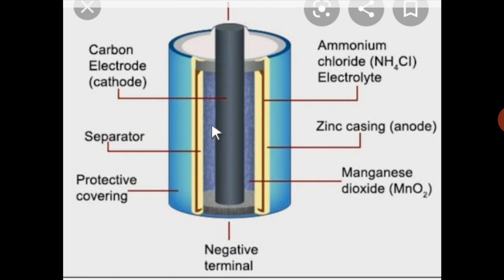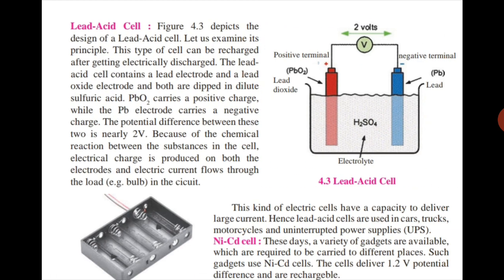Due to the wet pulp used in this cell, the chemical reaction proceeds very slowly. Hence, a large electric current cannot be obtained from a dry cell. As compared to electric cells using liquids, the shelf life of a dry cell is longer. Dry cells are very convenient to use as they can be held in any direction and used in mobile instruments. These dry cells are not rechargeable cells.